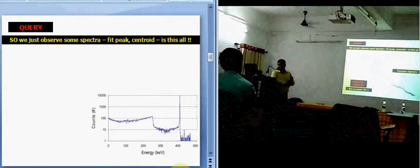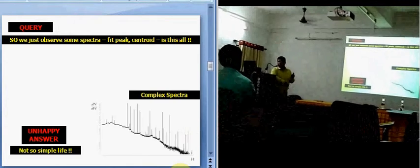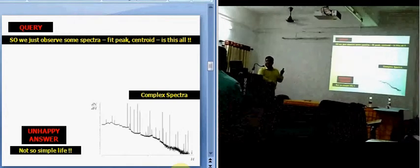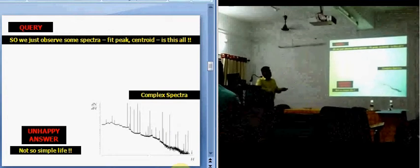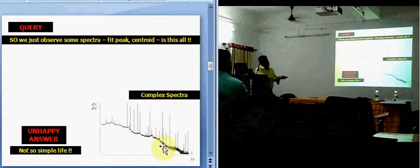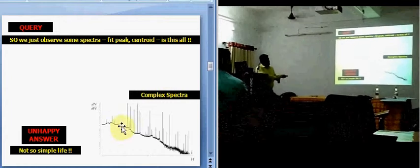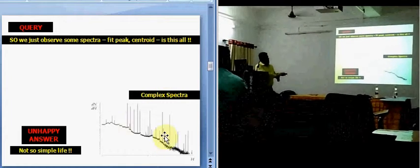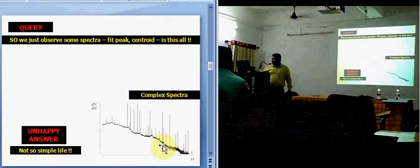But that is not a practical case. Very rarely does a nucleus emit a single gamma ray. Normally, what we observe is a nucleus decays through a set of very closely spaced gamma rays, as you can see over here. So you see that our life is not very simple.